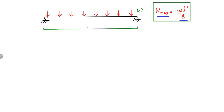This is a really well-known formula for a simply supported beam, which is mostly encountered in real-life situations. Here, W is the uniformly distributed load acting on the beam, and L is the length of the beam. There is a hinge support at A and a roller support at B. Both supports take vertical reactions R_A and R_B. The moment at these supports is equal to zero because roller and hinge supports cannot take any moments.